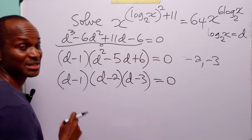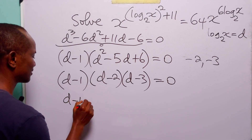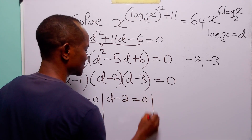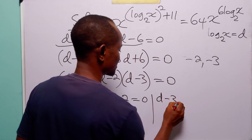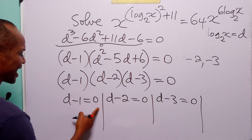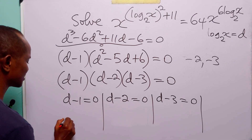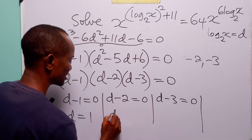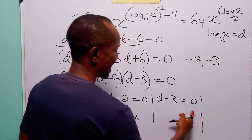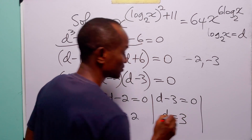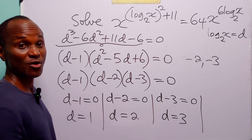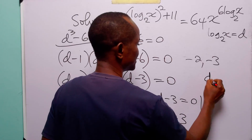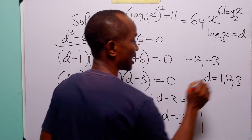This means that either d minus 1 equals 0, or d minus 2 equals 0, or d minus 3 equals 0. Adding 1, 2, or 3 respectively to both sides gives us d equal to 1, d equal to 2, and d equal to 3. So the three values of d that satisfy this cubic equation are d equal to 1, 2, and 3.